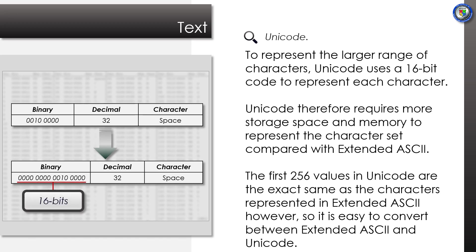Unicode uses 16 bits to represent each character. Therefore, this requires more storage space and memory to represent the character set compared with extended ASCII — actually double. The first 256 values in Unicode are the exact same as the characters represented in extended ASCII, which makes it easy to convert between the two.